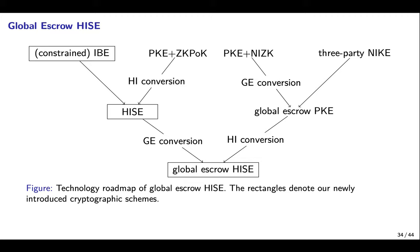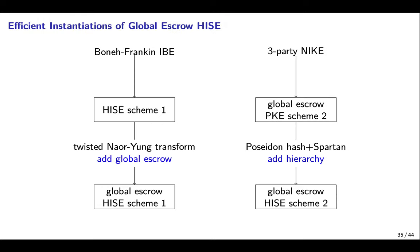This is the technology roadmap of global escrow HISE, where one can freely take any path from a leaf node to the root node. Combining previous results, we present two instantiations. By applying the twisted Naor-Yung transform to HISE scheme 1, we obtain global escrow HISE scheme 1. By combining Poseidon hash and SPARTAN with global escrow PKE scheme 2, we obtain global escrow HISE scheme 2.